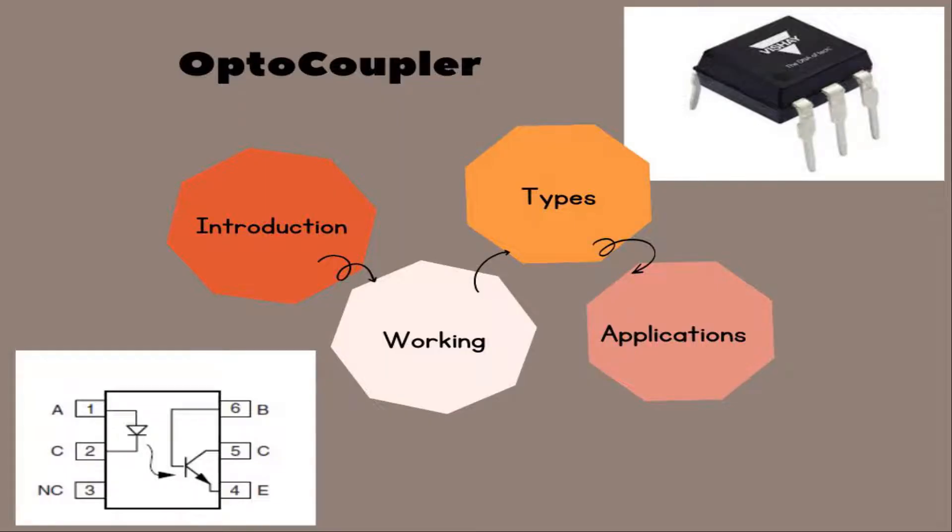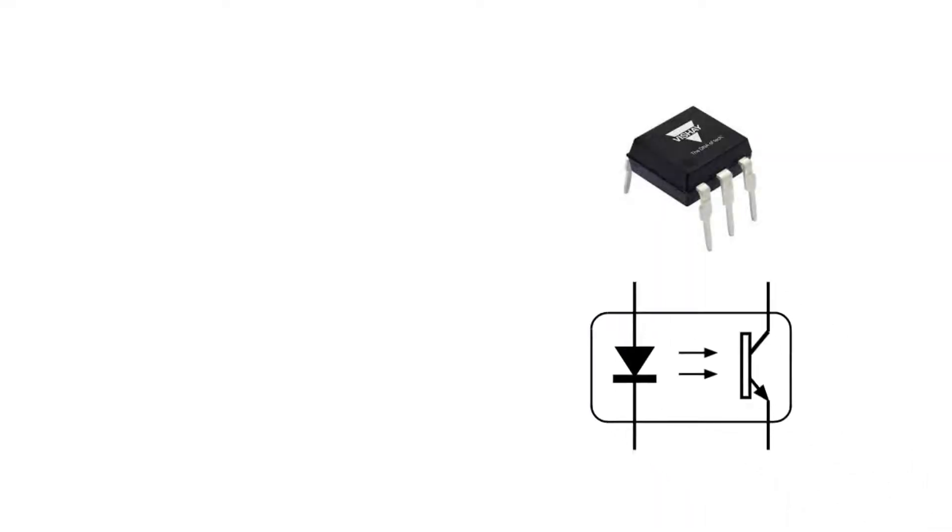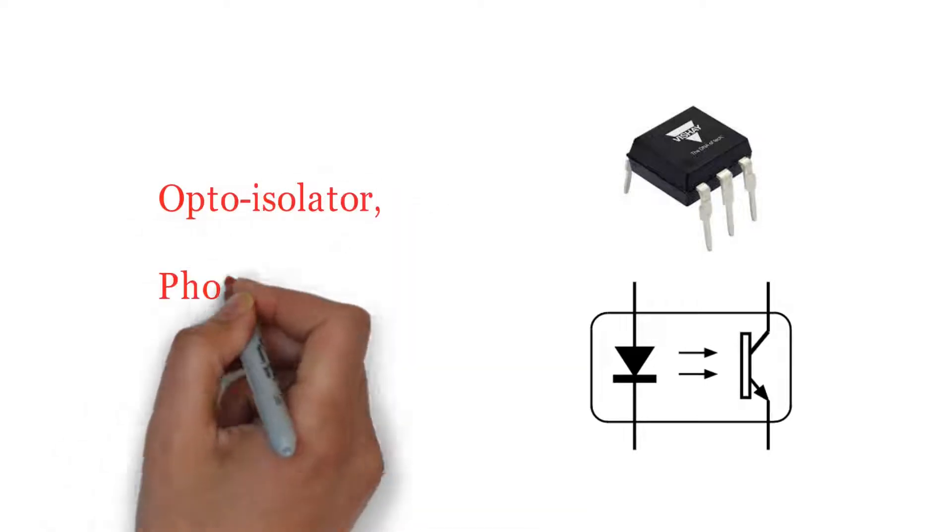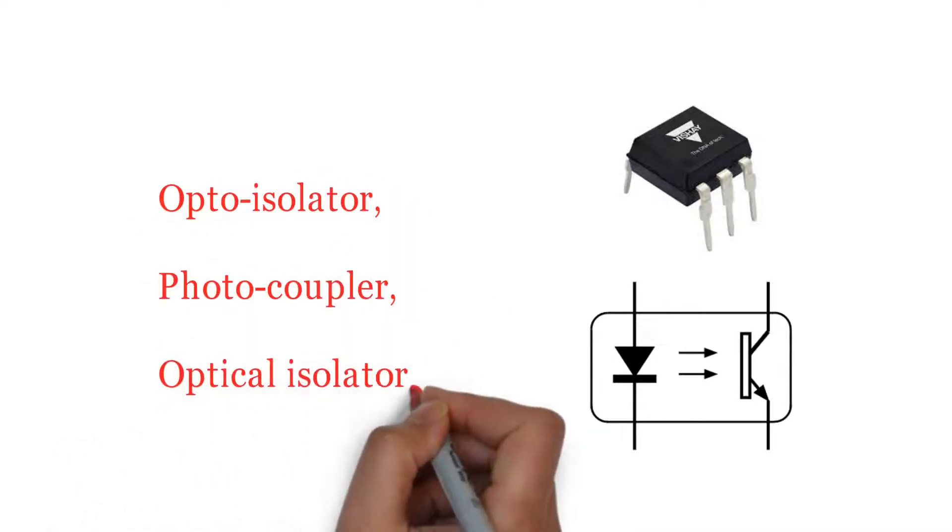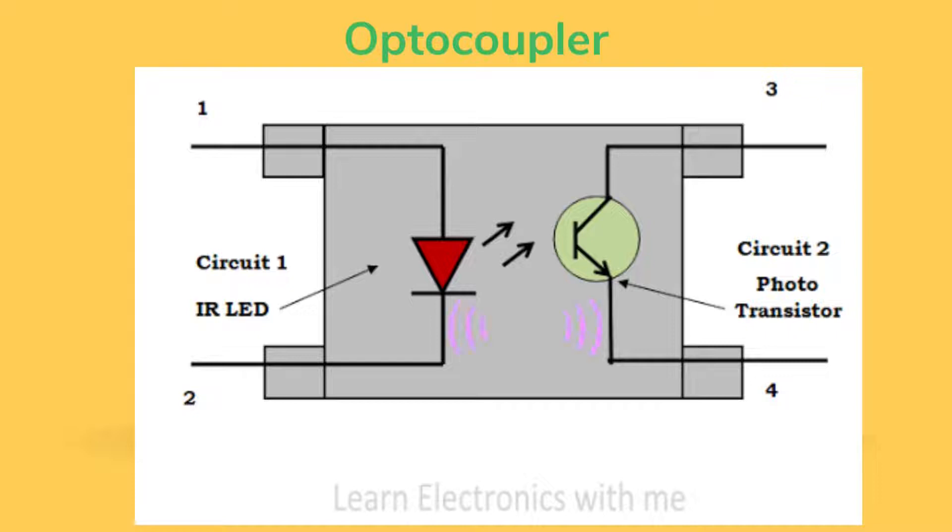This video is a comprehensive guide about various aspects of optocoupler, so watch video till end and get learned by watching this short and informative tutorial. An optocoupler is also called an optoisolator, photocoupler, or optical isolator. An optocoupler is a semiconductor device that allows an electrical signal to be transmitted between two isolated circuits.